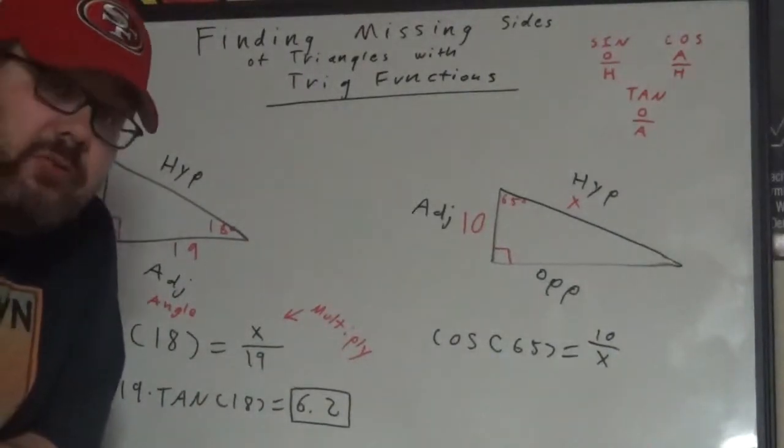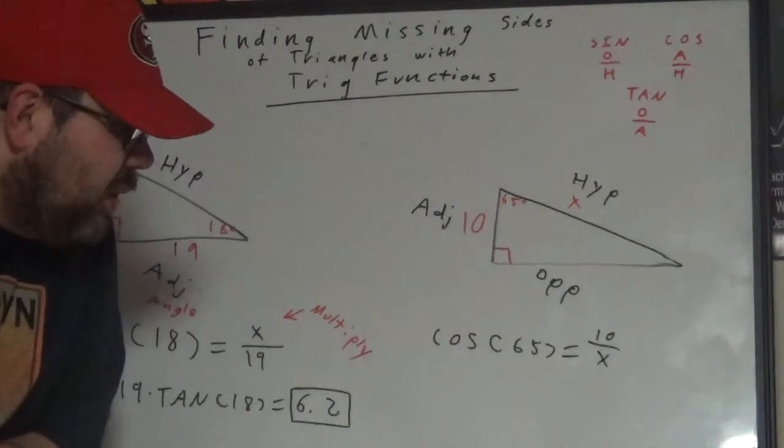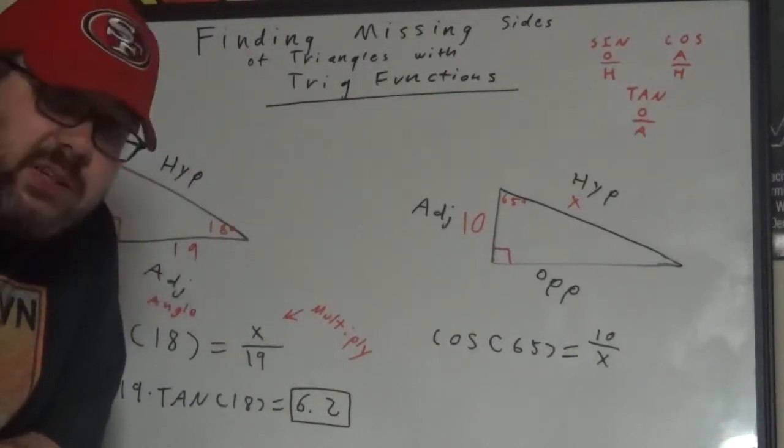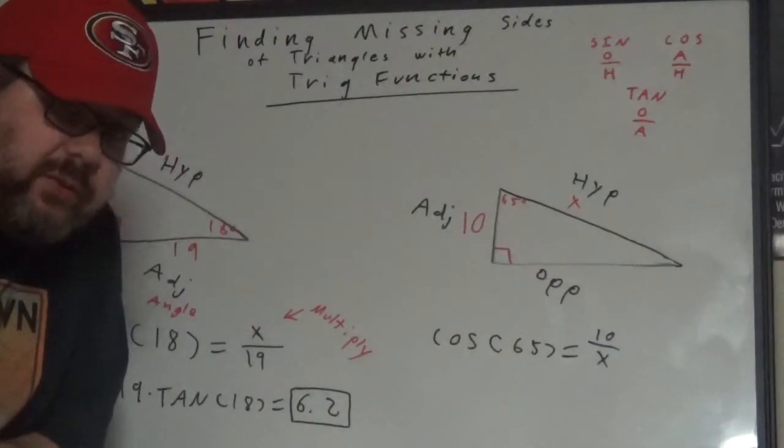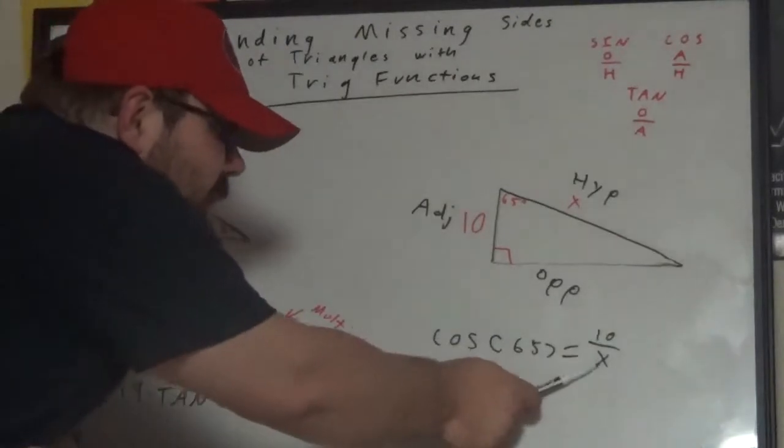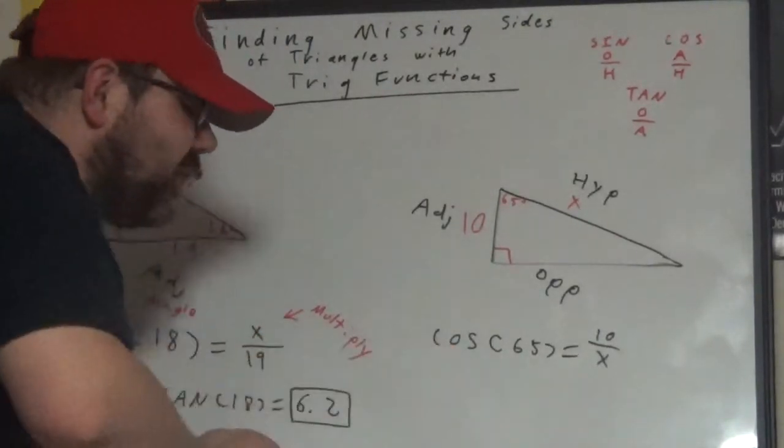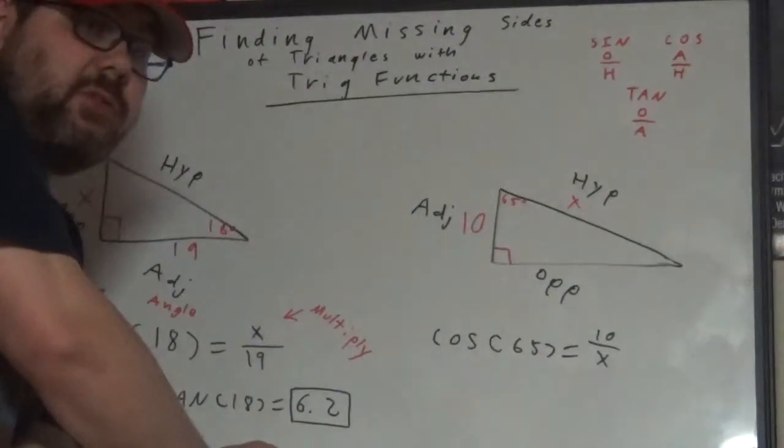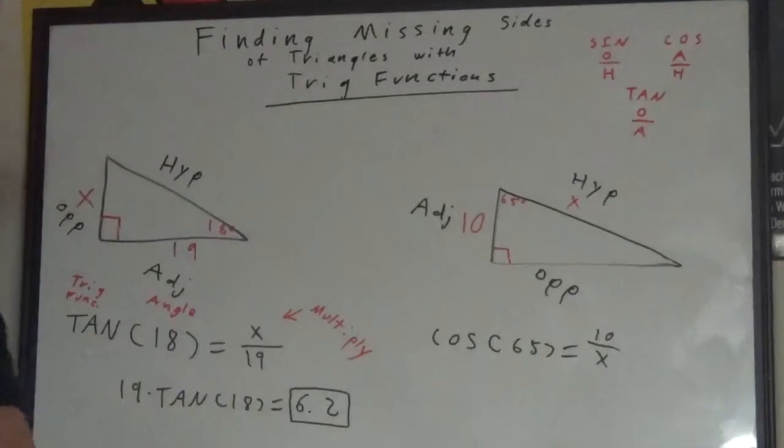And now, again, we solve this as an equation. Now this is a two-step equation because we have to get the x out of the denominator. We would multiply by x and then divide by cosine 65. And that is fine, I like as a shortcut.